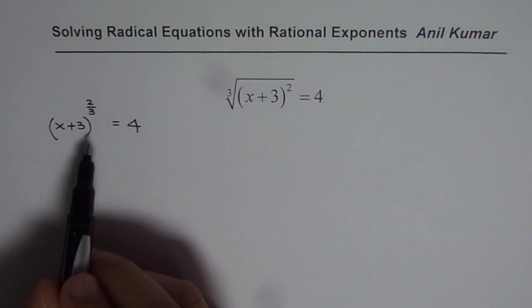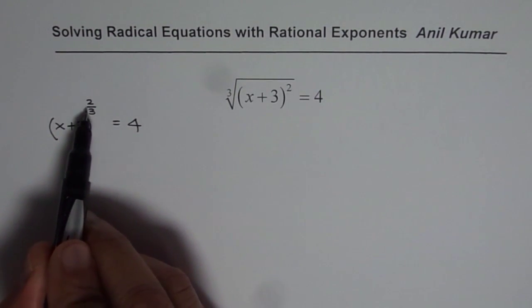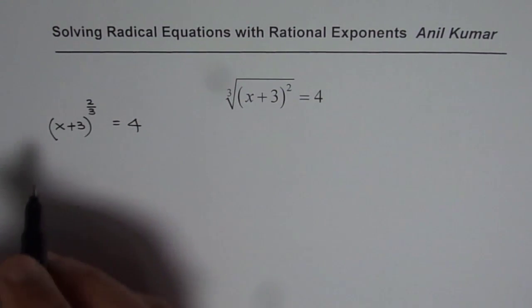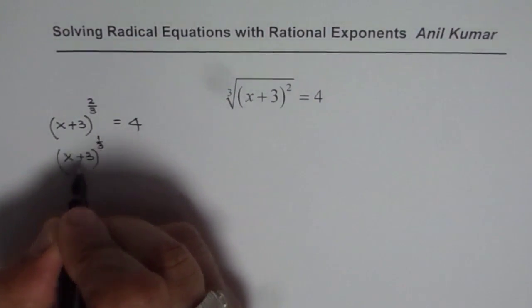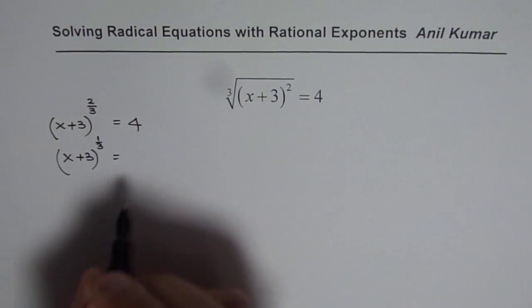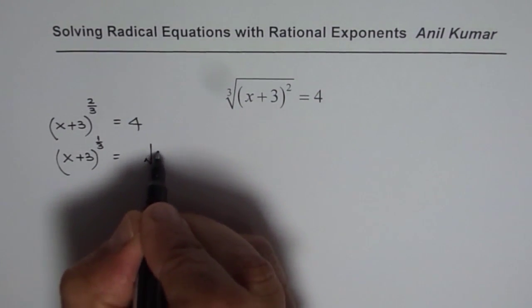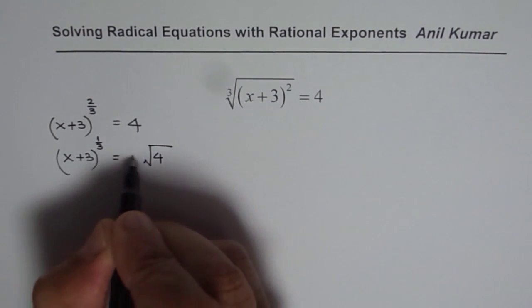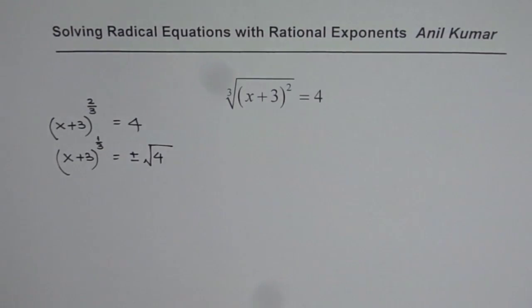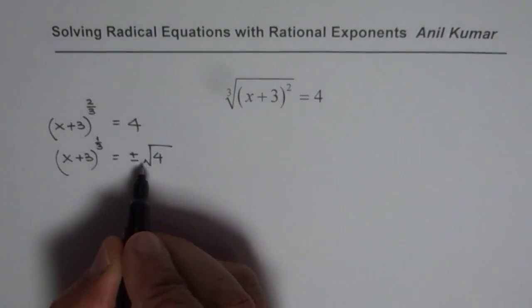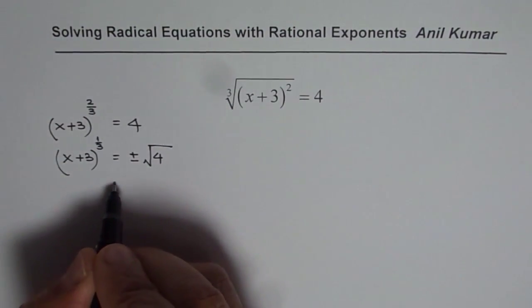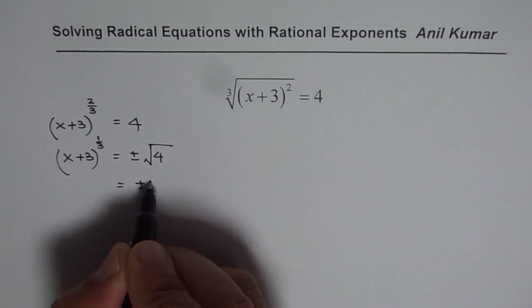Now let us do it in steps. First, let us square root both sides. So when we square root both sides, we will get x plus 3 to the power of 1 over 3. Now this side when you do square root, you get square root of 4. Whenever you do square root, you should take both positive and negative answers. Positive and negative of square root of 4 gives you plus minus 2.